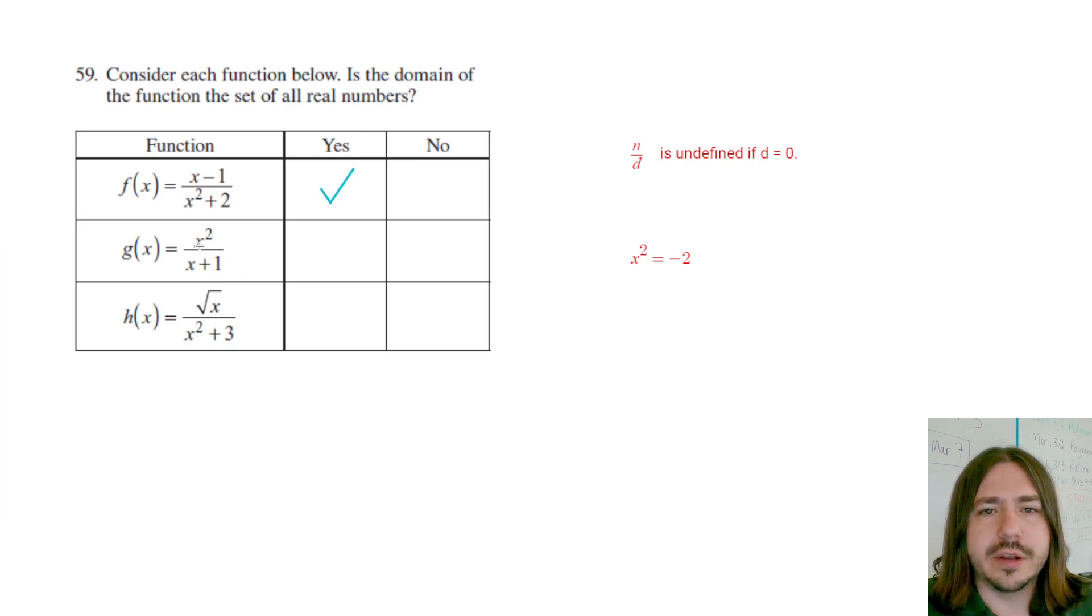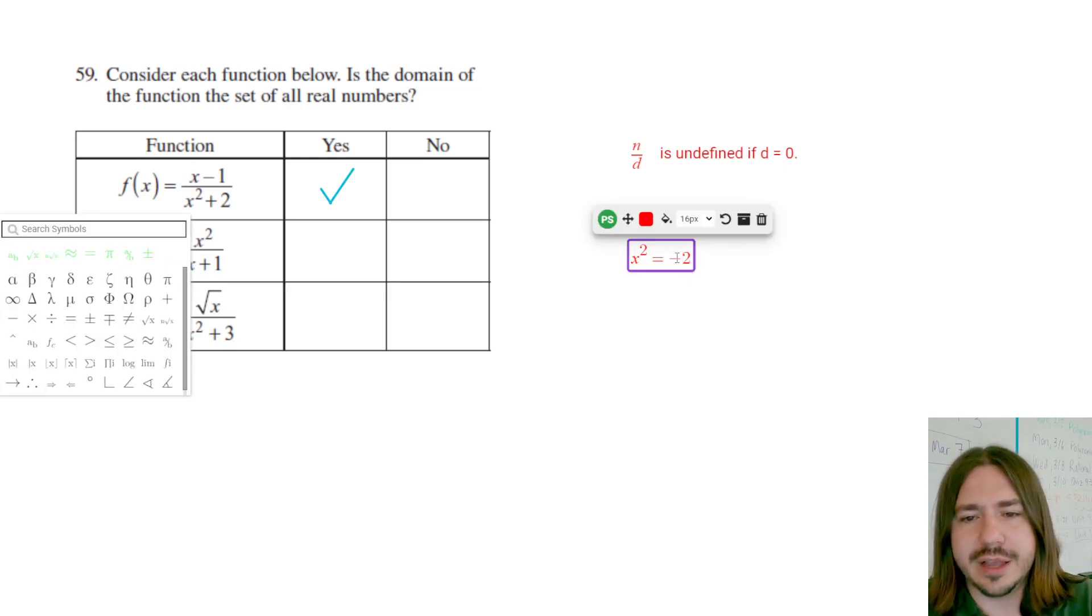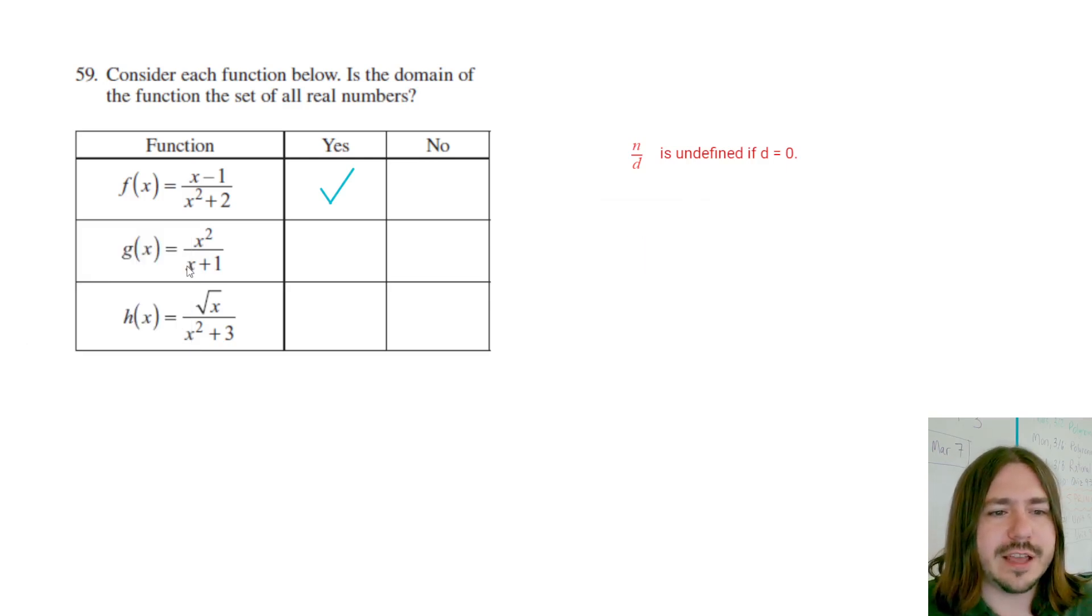For the second one, it was pretty easy to find an x value that makes this undefined, and that is when x is negative one. If x is negative one, then we get negative one plus one which is zero.